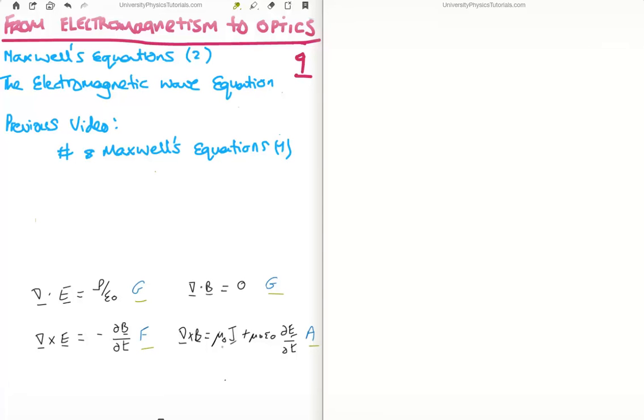Now this as it stands was very difficult to manipulate and Maxwell didn't manipulate the formulas in this particular form. What he did notice was that if you were in free space you had the charge density that was going to be equal to zero and you also had the current density that was going to be equal to zero. So you had no electric charges.